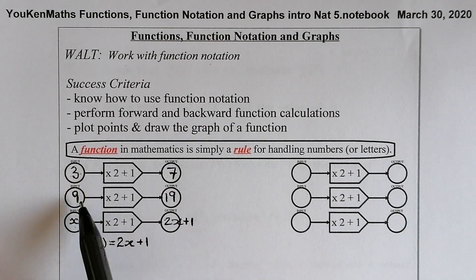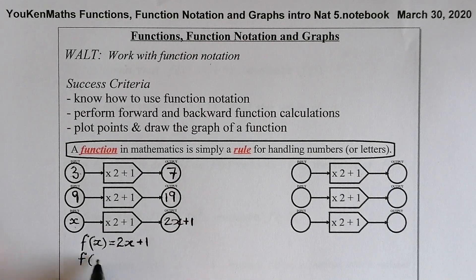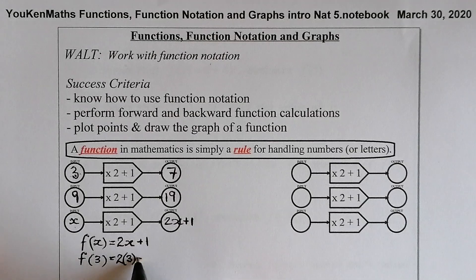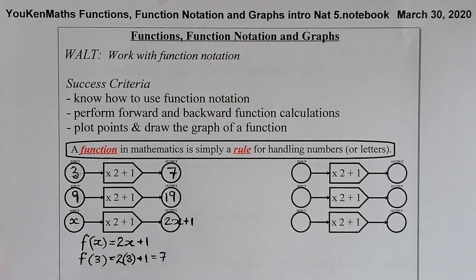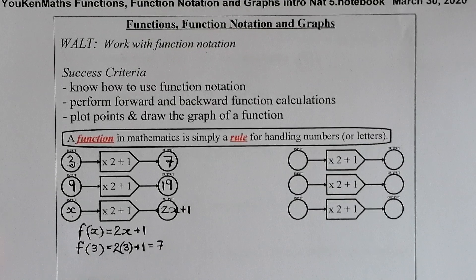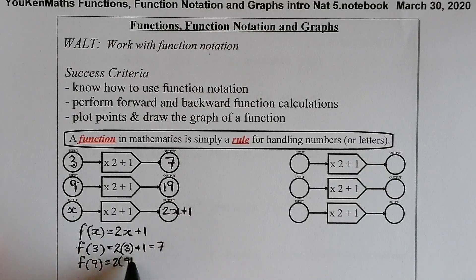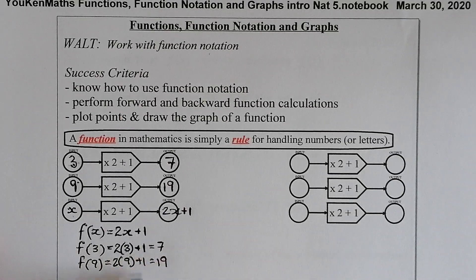If I write the earlier examples in function notation: f of three is equal to two times three plus one. Two times three is six, plus one is seven — so f of three equals seven. Then f of nine is equal to two times nine plus one, which gives 18 plus one, and that gives us 19 coming out from that function.